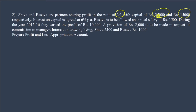Shiva's capital is 25,000 and Baswa's capital is 15,000. Interest on capital is agreed at 6% per annum. Baswa is allowed an annual salary of 1,500 rupees.